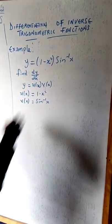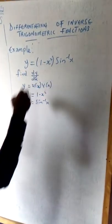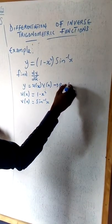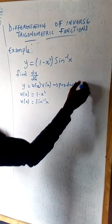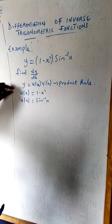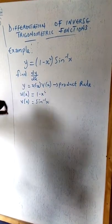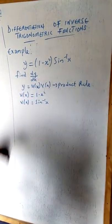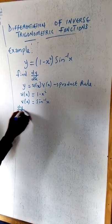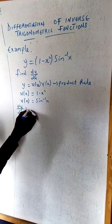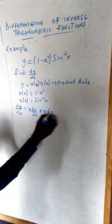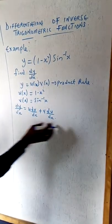When two functions of x are multiplying each other, we apply the product rule. Let me identify the first function u and the second function v. The product rule states that dy/dx equals u times dv/dx plus v times du/dx.